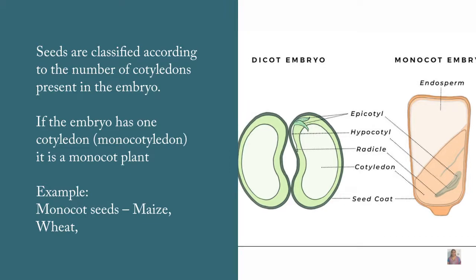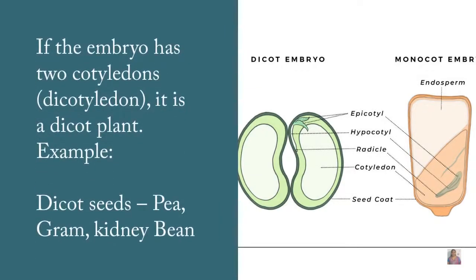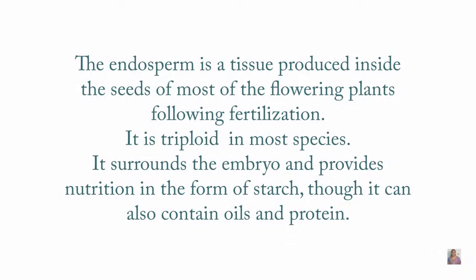Monocot plants include maize and wheat as examples. If the embryo has two cotyledons, then it is described as a dicotyledon, or dicot plant. Green peas, gram, and kidney beans are examples of dicot plants.